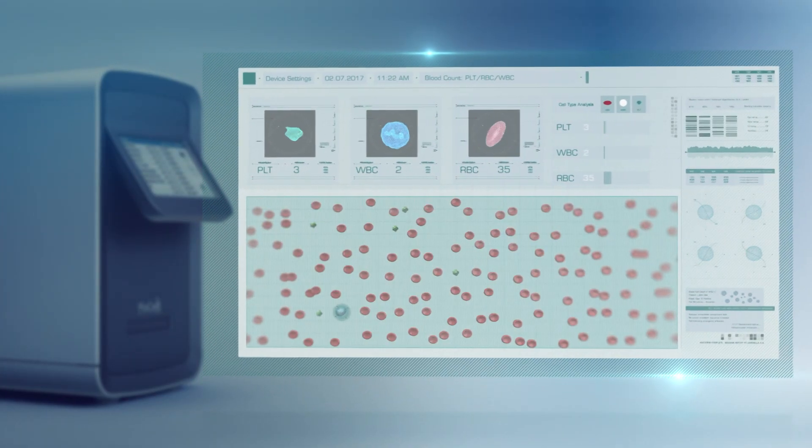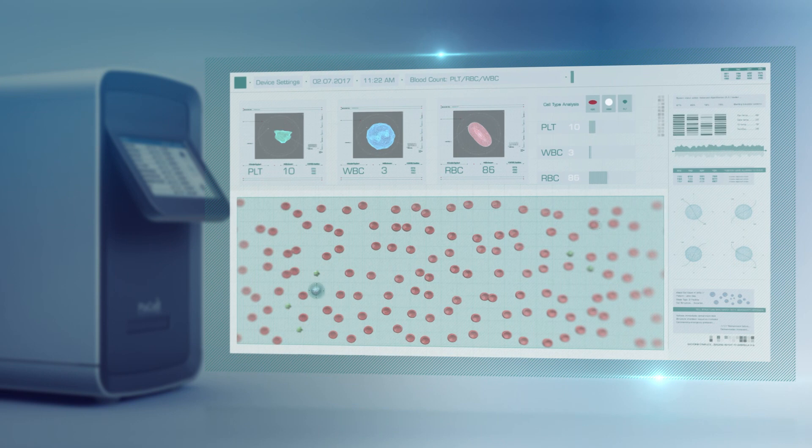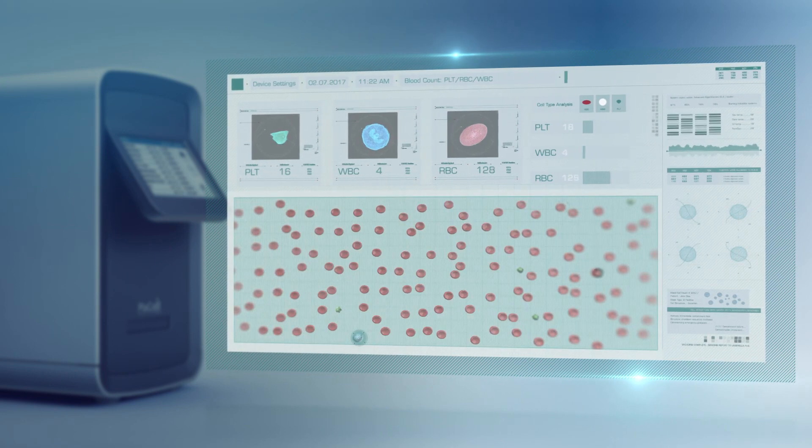Initially, the system counts the red blood cells, white blood cells, and platelets based on the cell's shape, size, and color.